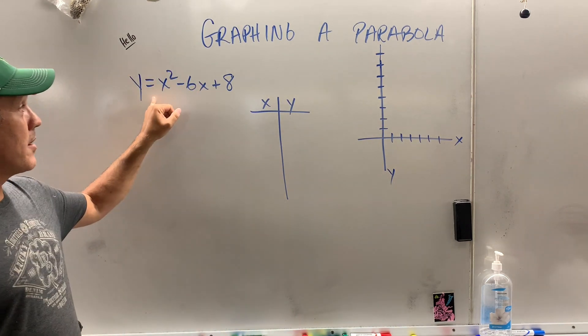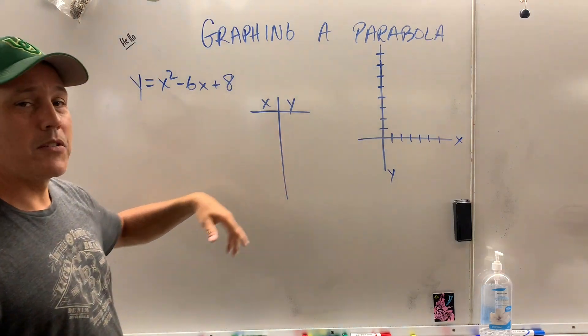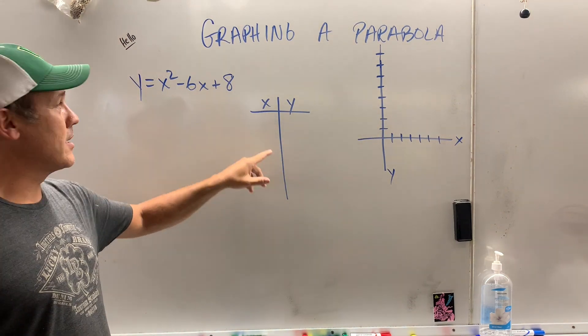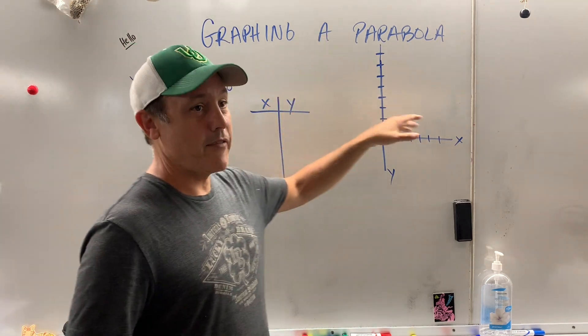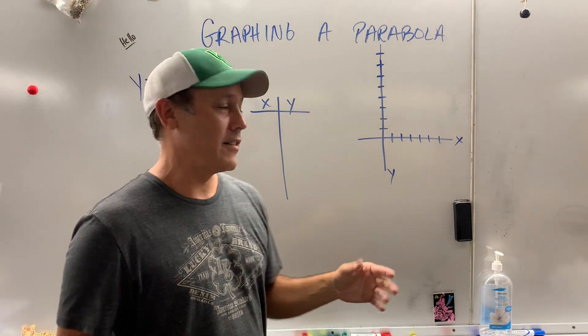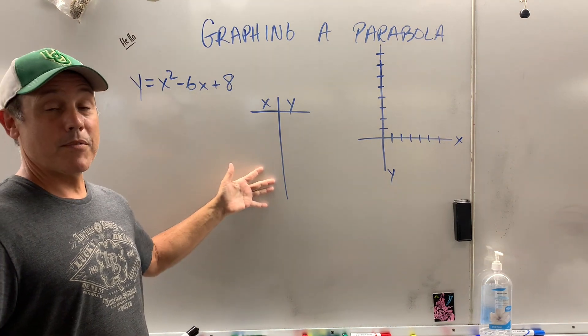So, you have a parabola here, and I have a little makeshift graph over here and a table. Now, you can always just plug and chug numbers. You can pick numbers for x, pop it in here, get a number for y, graph them, and then just let the graph speak for itself. But I want to save time. I don't want to put a million numbers in here.